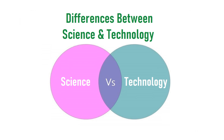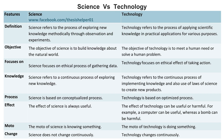Differences between Science and Technology. Science refers to the process of exploring new knowledge methodically through observation and experiments, whereas technology refers to the process of applying scientific knowledge in practical applications for various purposes.